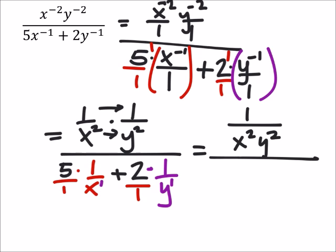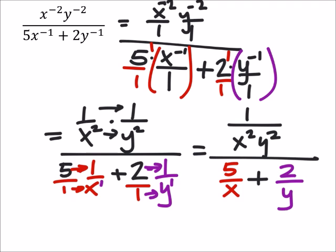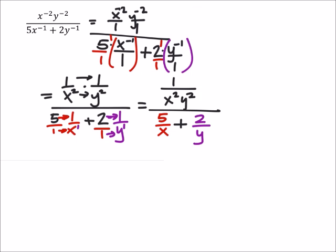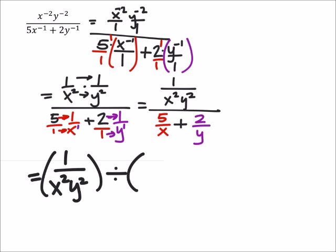Staying consistent with what we had — five over one and two over one — that helps us see what we're multiplying together. I can make the numerator one over x squared y squared by multiplying numerators and denominators together. In the denominator I've got five times one over x, which is five over x, and I'm adding two times one over y, which is two over y. Now I'll write this as a division problem: one over x squared y squared, divided by five over x plus two over y.